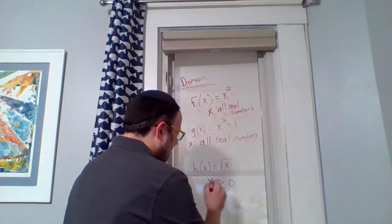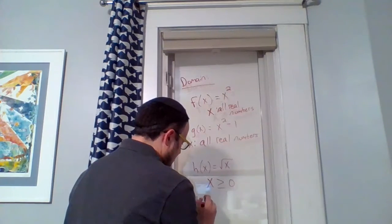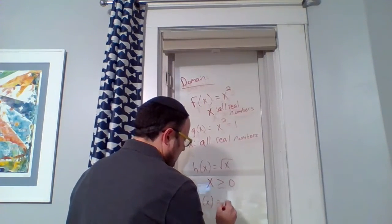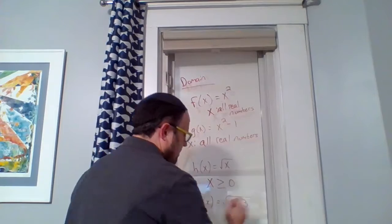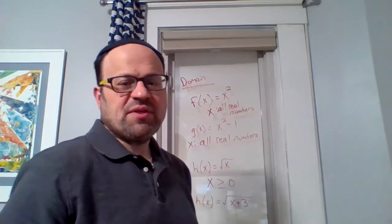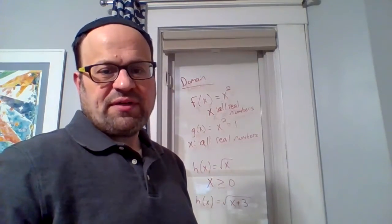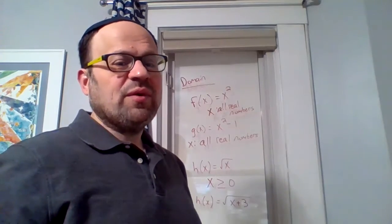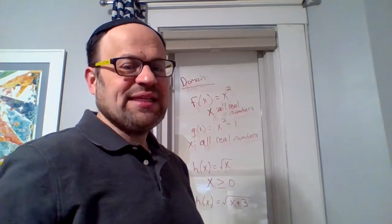Now, what about if I change it a little bit? What if I have x plus three inside the square root sign? Now, what restrictions are there? What is x allowed to equal?